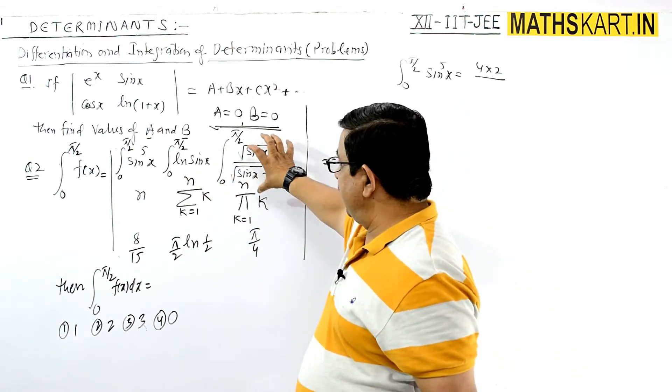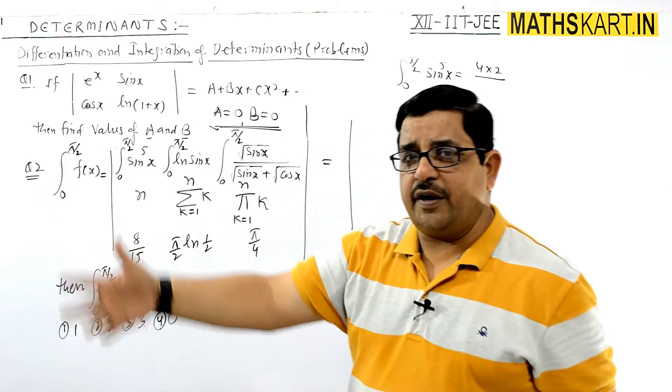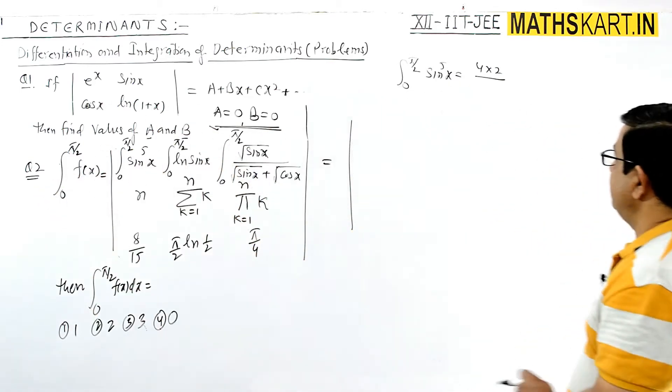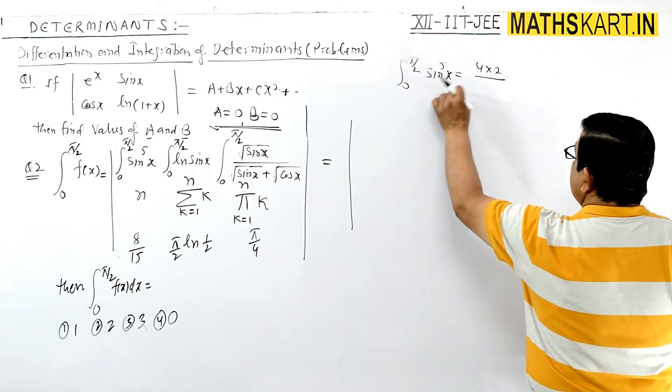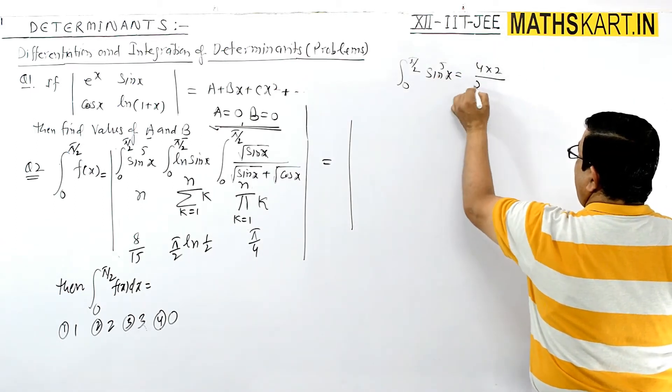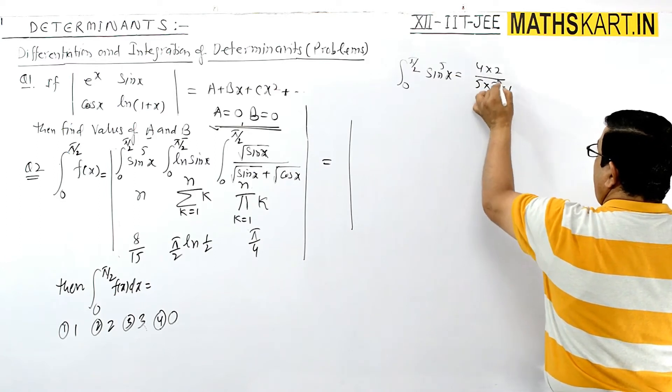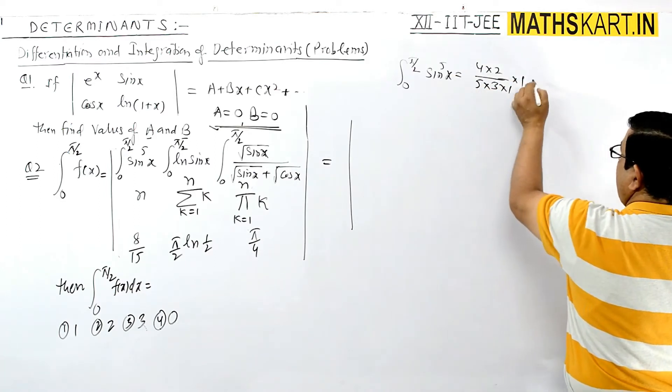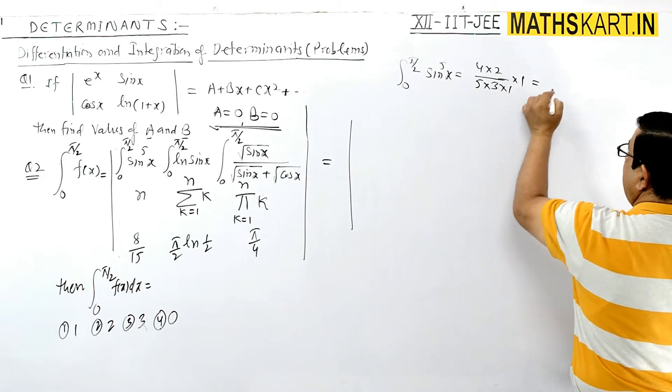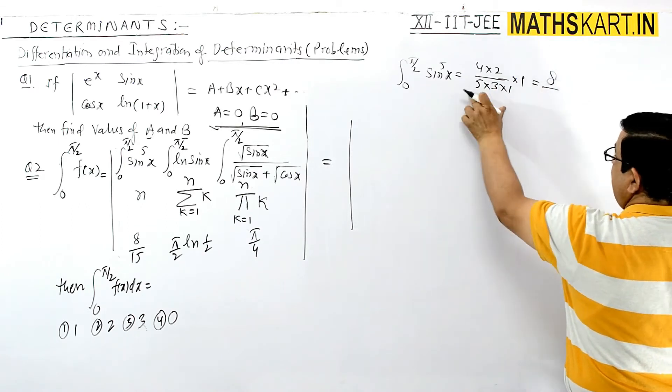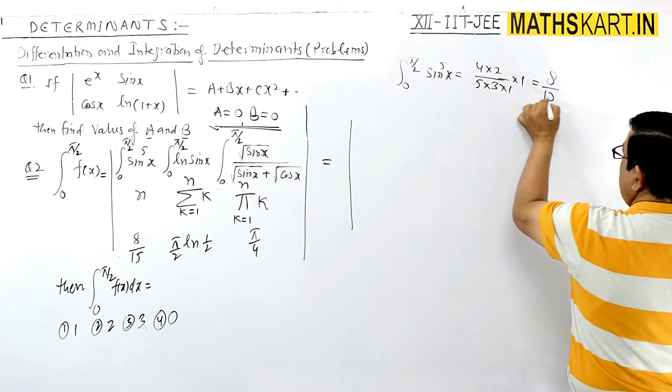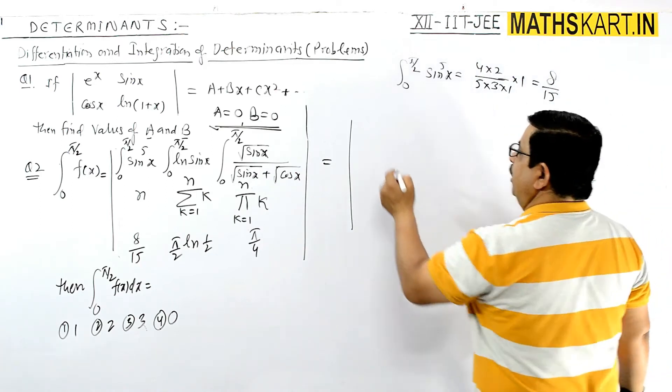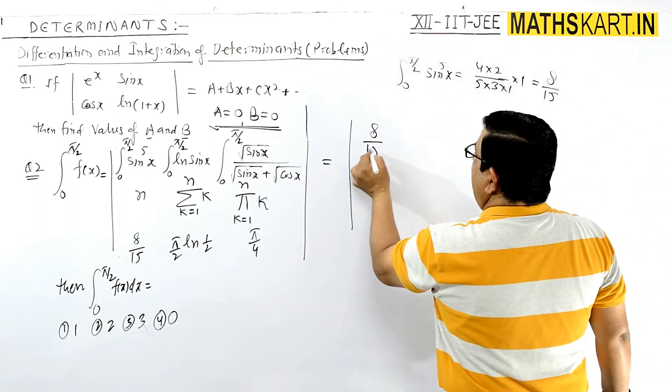Now if you want to check it, then check the definite integration concept there. So sin 5x, then n minus 1, 4, 2 divided by 5 into 3 into 1, and this is k ki value 1. This is all I have to write directly because we have discussed it in the definite integration. So it is 8 by 15, is ki value a jaegi 8 by 15 first.